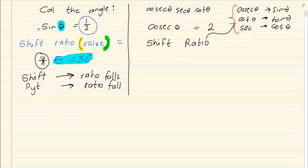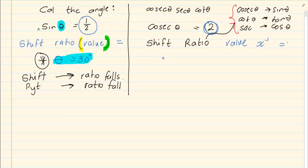So we press shift, we press the ratio, then you press the value. The value is the number opposite the equal-to sign. But the difference is you need to press x to the power of minus 1, and then press equal. If you are not comfortable with this method, you know that cosec is 1 over sin theta.